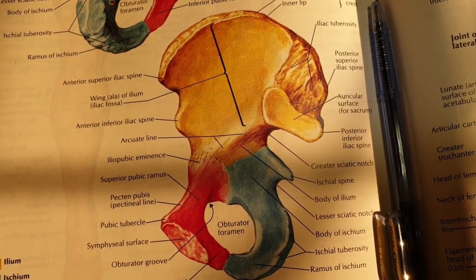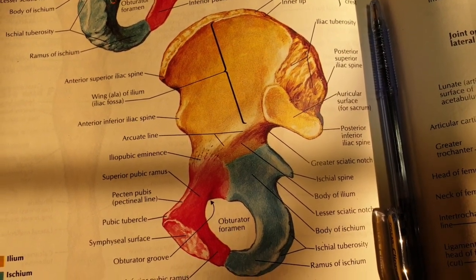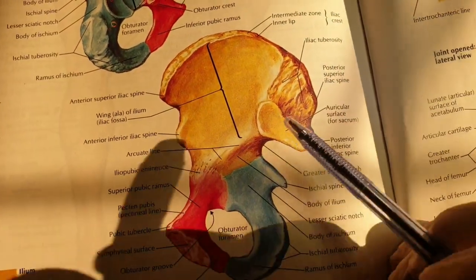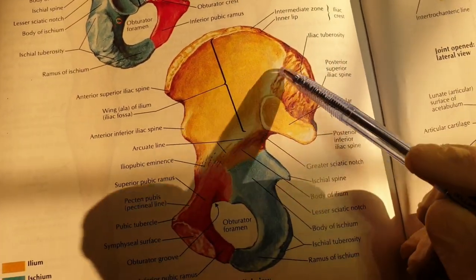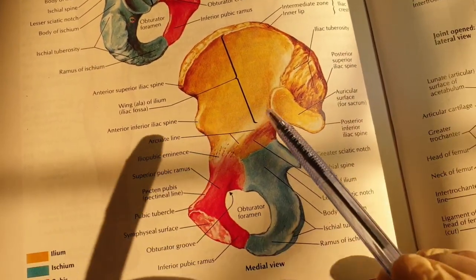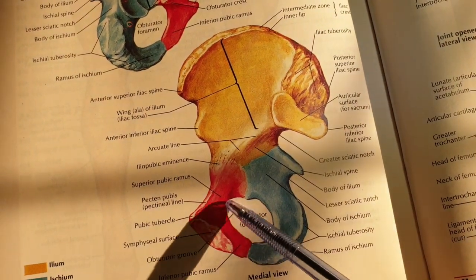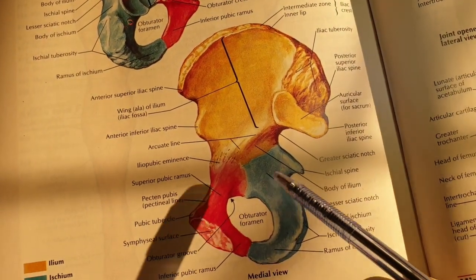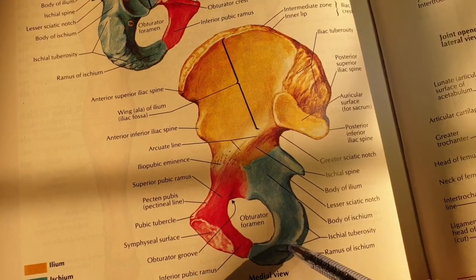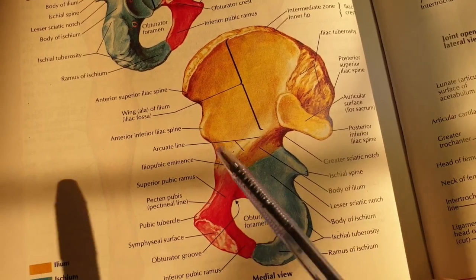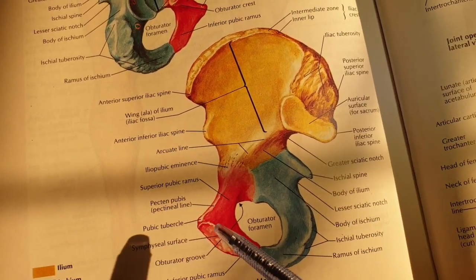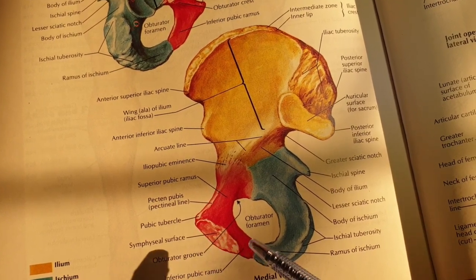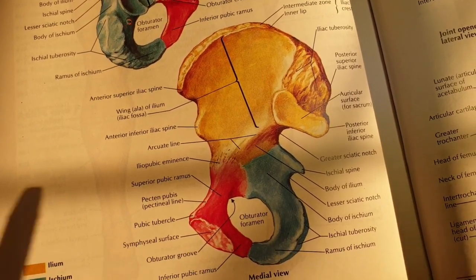The hip bone is composed of three bones, colored differently in this picture. The upper bone is called the ilium. The one shown in red is called the pubis, and this one is the ischium. Ilium is the superior bone, pubis is the anterior bone, and ischium is the posterior bone.